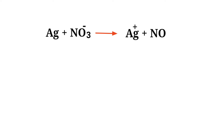First, figure out the reducing and oxidizing agents by the rules of assigning oxidation numbers. In the ion electron method, one reaction is divided into two half reactions, which are then balanced and added together.